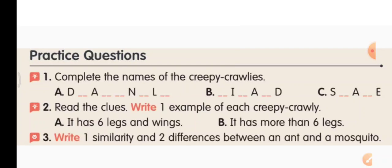B — dash I dash A dash D — it moves on walls, it is there in our house, it has less than six legs — it is a lizard, L-I-Z-A-R-D. C — S dash A dash E — it moves on the ground very close to the ground, it has no legs — it is a snake, S-N-A-K-E. Fill the missing letters in the blanks.